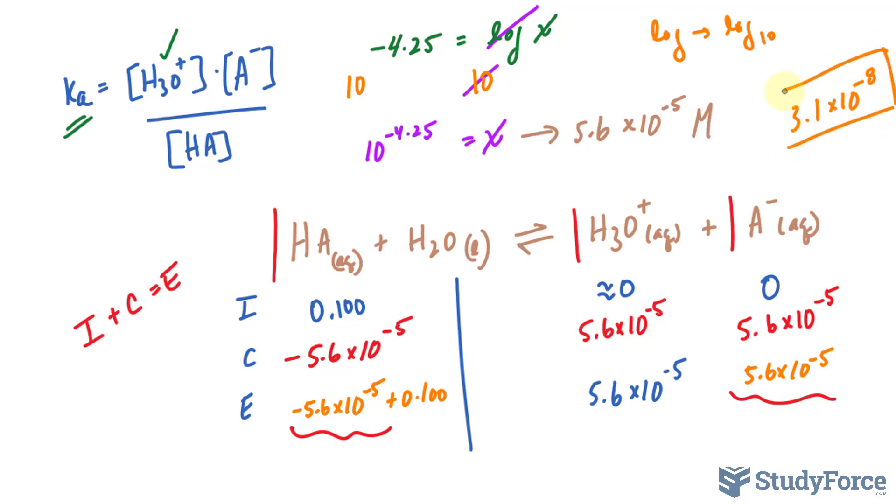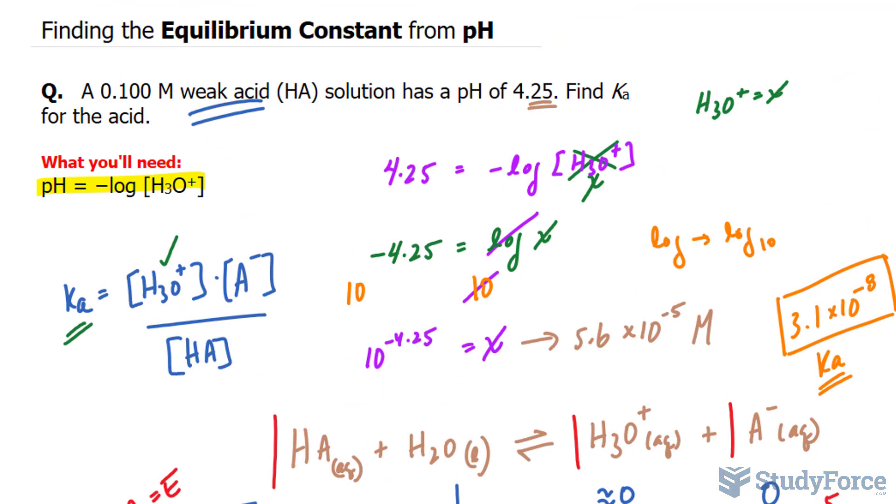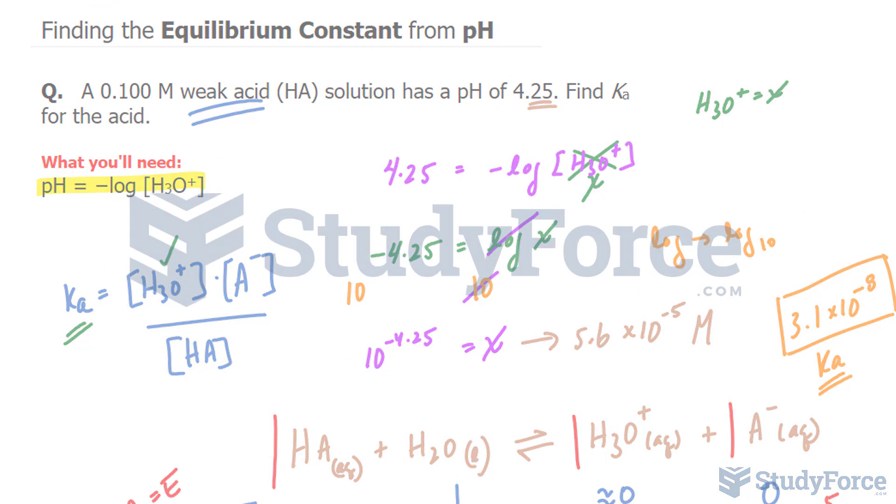It's a unitless number. That right there represents Ka. And there you have it—that is how to find the equilibrium constant from pH.